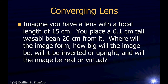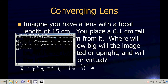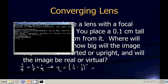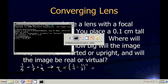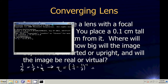The equations are the same as for mirrors. 1 over F equals 1 over P plus 1 over Q, which means Q equals the quantity 1 over F minus 1 over P, raised to the minus 1. F is 15 centimeters, P is 20. So Q equals 1 divided by 15 centimeters minus 1 divided by 20 centimeters, raised to the minus 1. Q is 60 centimeters.